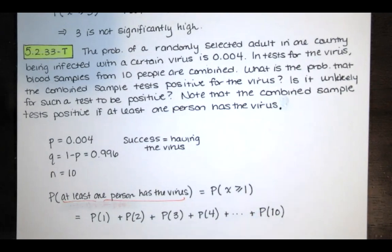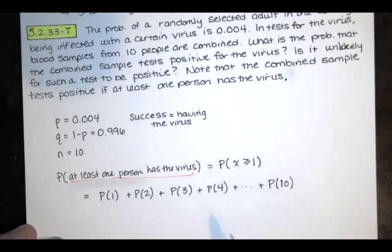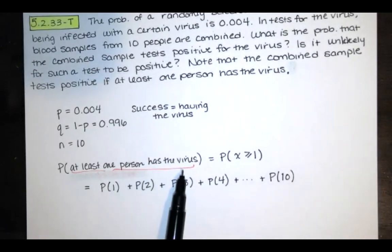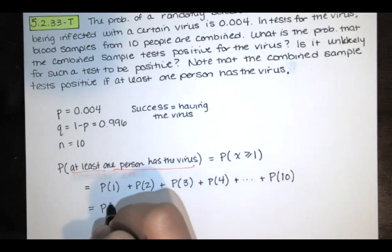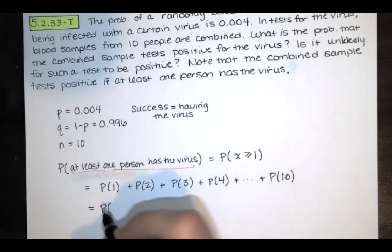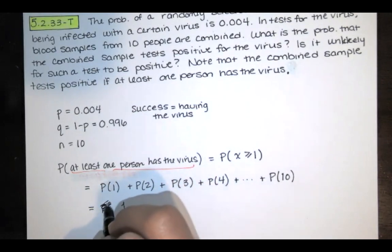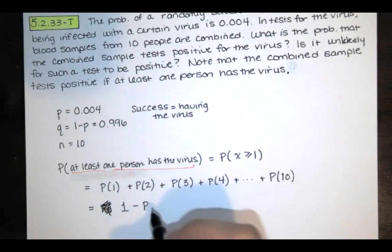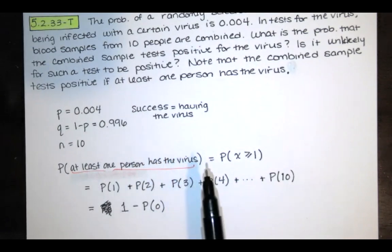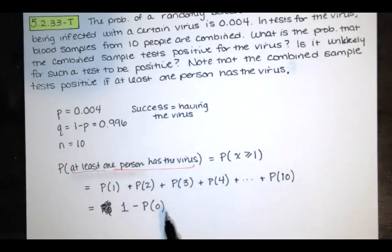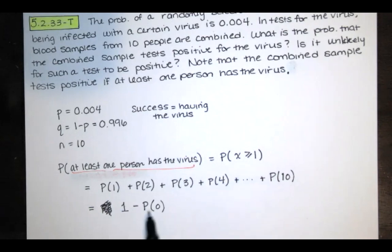That's a lot of calculation, so there's a better way to think about this. We can use the complement: the probability that at least one person has the virus equals one minus the probability that no one has the virus — that's X equals zero. This is much easier: we calculate just that one probability and subtract it from one.